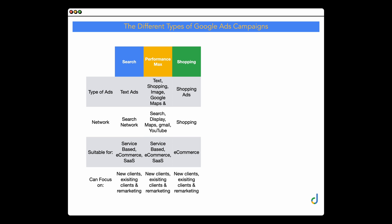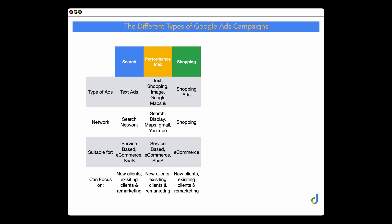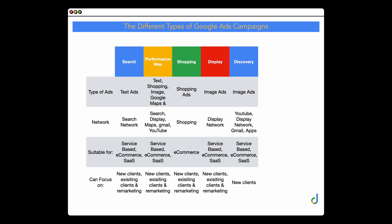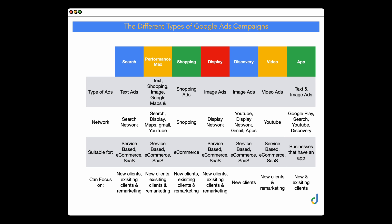Shopping campaigns are only on the shopping network and only for e-commerce brands. Display is for image ads and only appears on the display network. Discovery — which has now been updated to Demand Gen, so discovery campaigns no longer exist — covers image ads and video ads with a focus on YouTube Shorts. Then there are video ads, which are on YouTube only. The key thing about Demand Gen campaigns is that they are very much for new clients only — you don't have the option to target remarketing or existing clients. Think of that as top of funnel. And obviously there are app campaigns, which require an app to run.